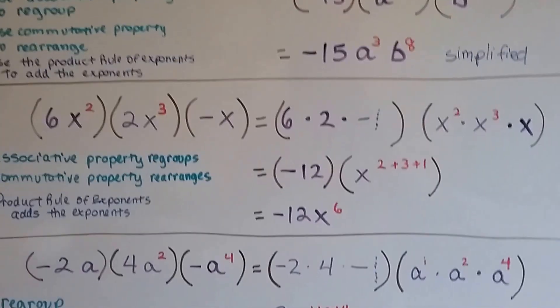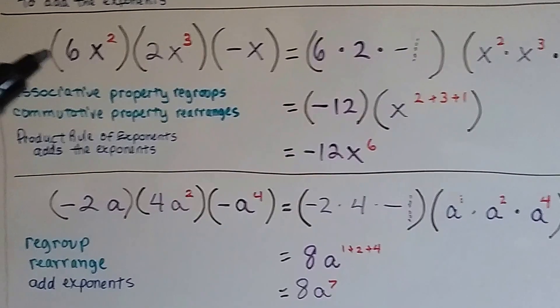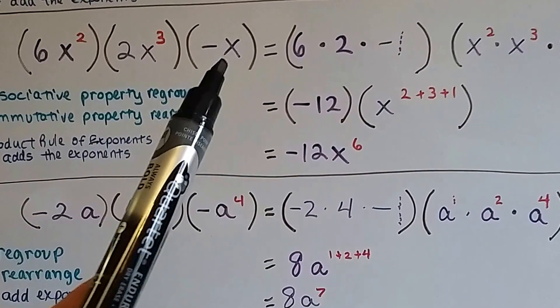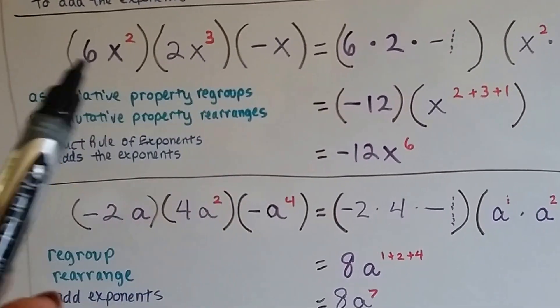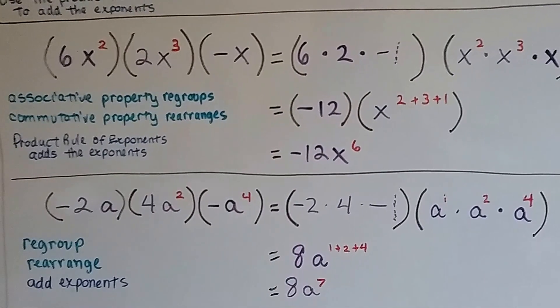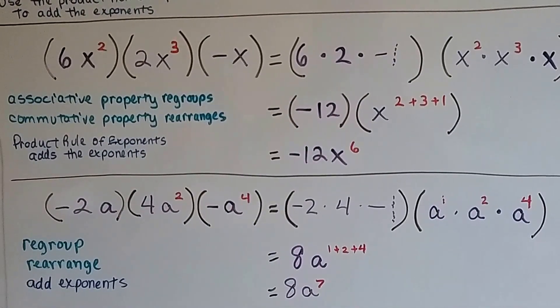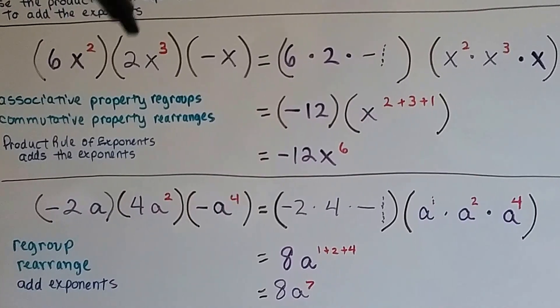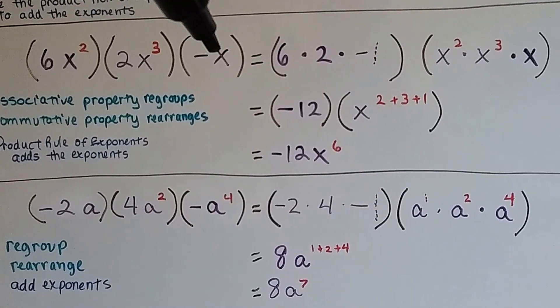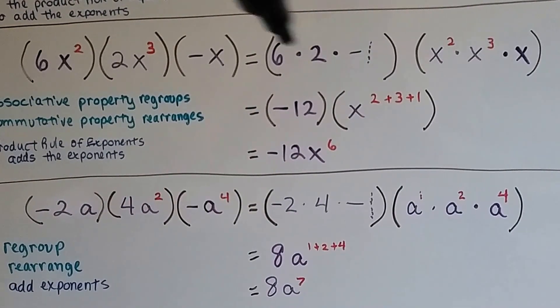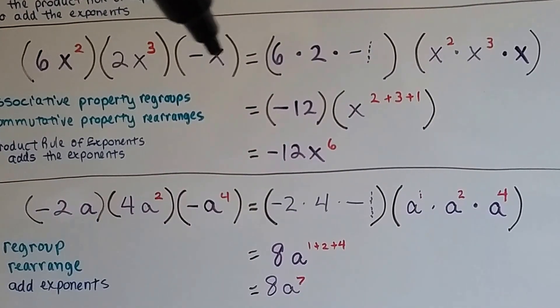Let's try an even harder one. Now we've got 6x squared times 2x to the third power times negative x. Now we're multiplying three monomials together. So, we use the associative property to regroup and the commutative property to rearrange. And we put out all the numbers. We pull out the 6, the 2, and that invisible 1 that's in front of that x. And we put them together.